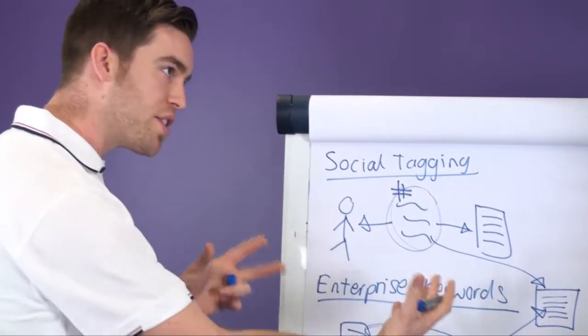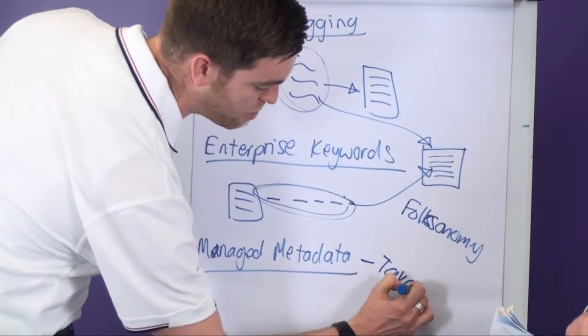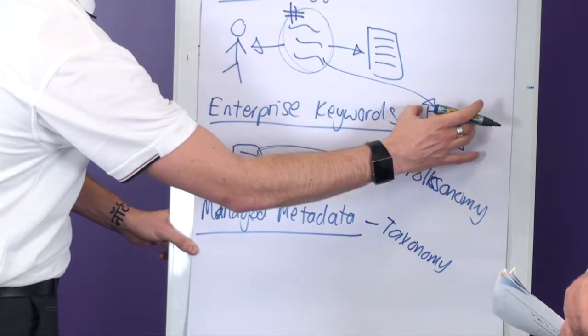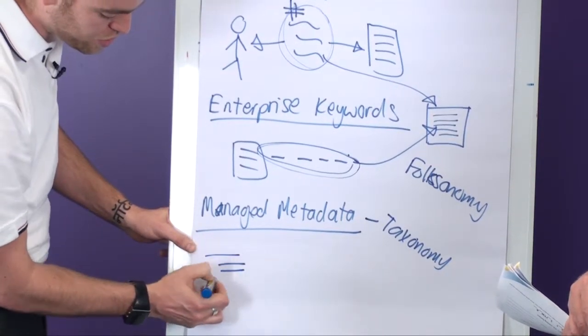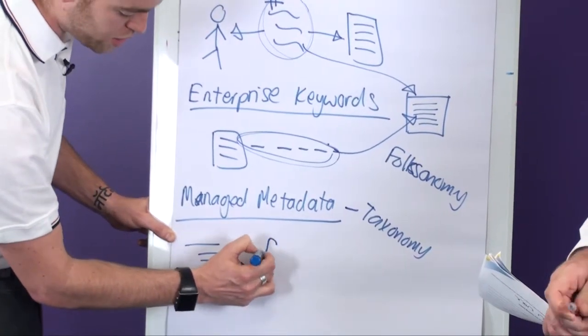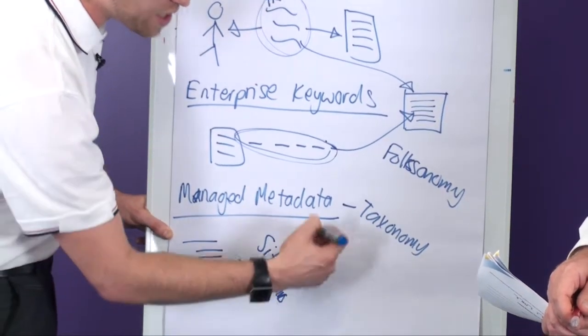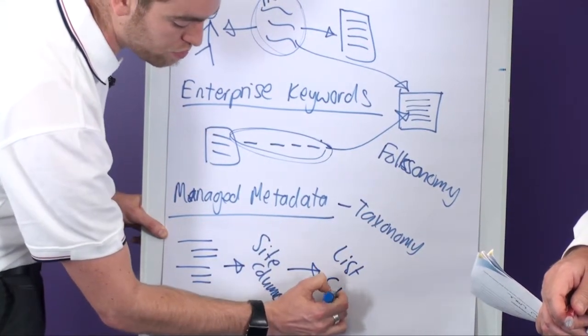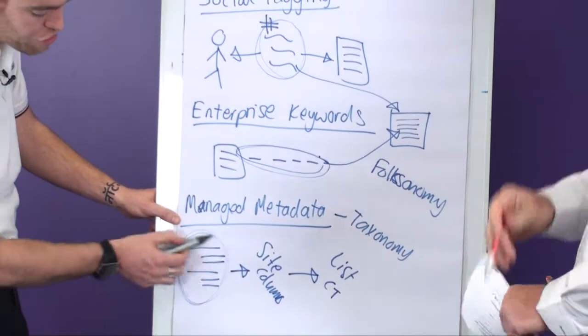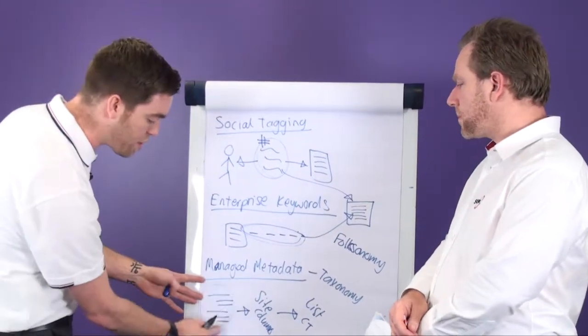Managed metadata is - yeah, this is more of a taxonomy. And the idea behind this is we have a series of term sets within the term store, same place the enterprise keywords is stored, which allows you to use this kind of hierarchical structure. These are then fed into a column within the site columns gallery, and then those columns are then attached to the list or library or content type. And the benefit of this is that it's very much a structured approach. So what you can do is limit them to only allow them to tag items with the terms within this particular term set.